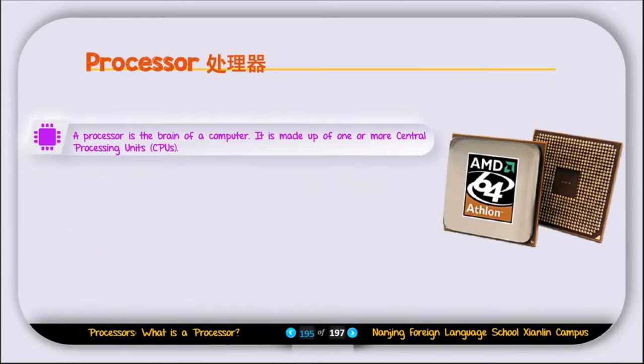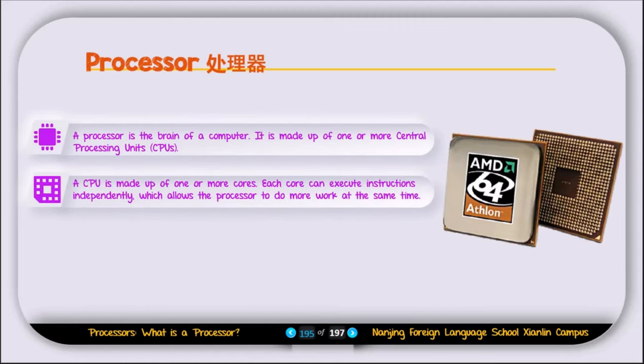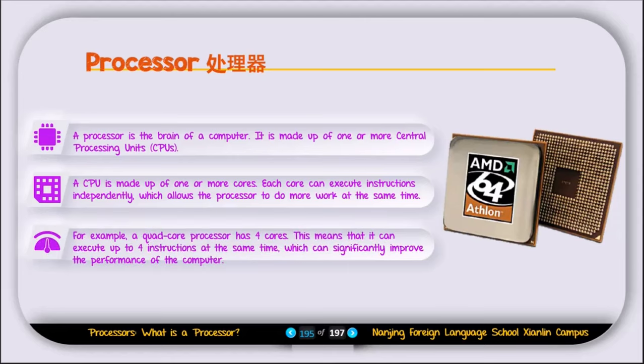Now let's discuss processors. A processor is the brain of a computer. It is made up of one or more central processing units or CPUs. A CPU is made up of one or more cores. Each core can execute instructions independently, which allows the processor to do more work at the same time. For example, a quad-core processor has four cores. This means that it can execute up to four instructions at the same time, which can significantly improve the performance of the computer.